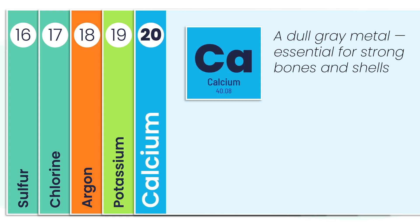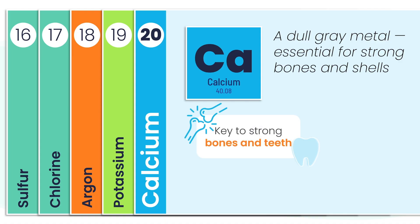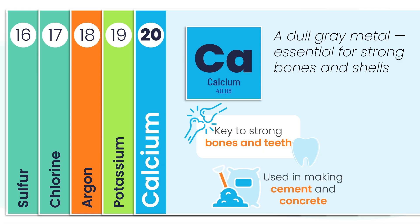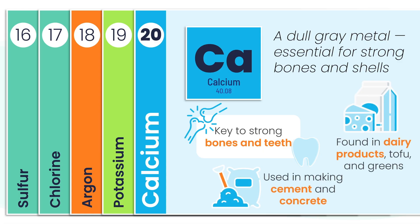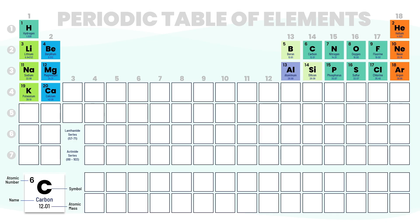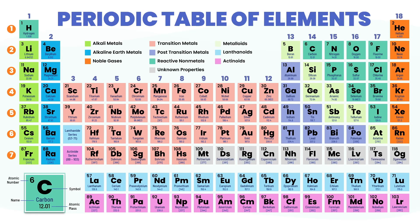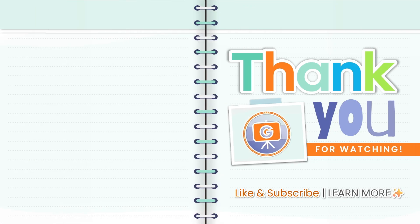Calcium is a dull gray metal, but don't let that fool you — it's essential for building strong bones and shells. It forms sturdy bones and teeth, strengthens cement and concrete, and shows up in foods like dairy, tofu, and leafy greens. 20 elements decoded, remembered, and ready for action. And this is just the beginning. Up next, we'll learn how these elements are grouped and what their positions on the periodic table can tell us. This is Learning with G — see you in the next lesson.